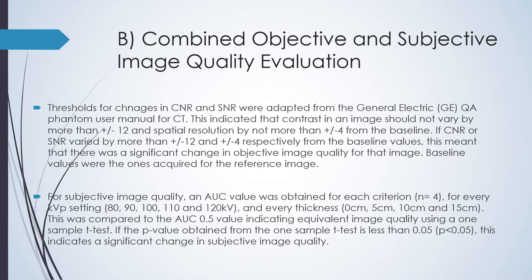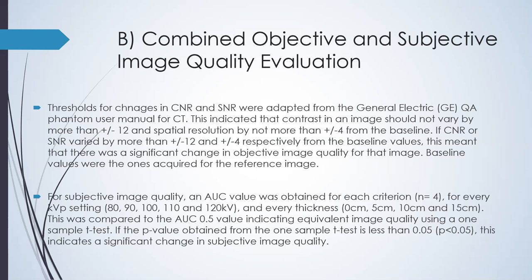For the subjective image quality, an AUC value was obtained for each criterion, each KVP setting, and every thickness. This was compared to the AUC 0.5 value indicating equivalent image quality using a one-sample t-test. If the p-value obtained is less than 0.05, this indicates a significant change in subjective image quality. For the first thickness — the phantom only at 20 centimeters — there was no significant difference in subjective image quality between images taken at 90, 100, 110, and 120 KVP. However, SNR thresholds at 120 KVP were exceeded, so the image at 110 KVP was selected. The dose at 110 KVP decreased by 56.5% for DAP and 76.2% for MAS from the reference image.